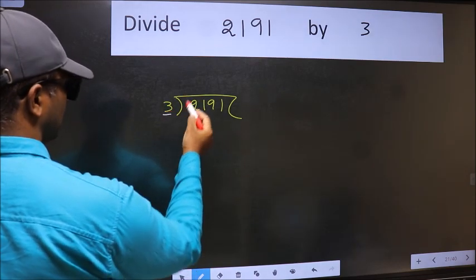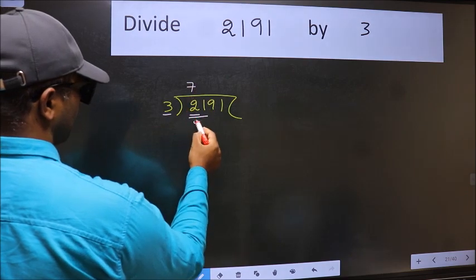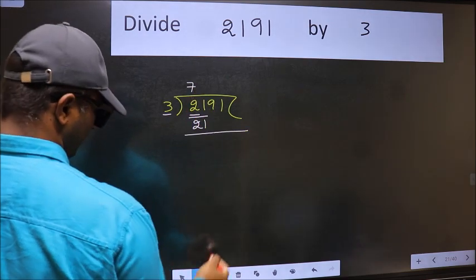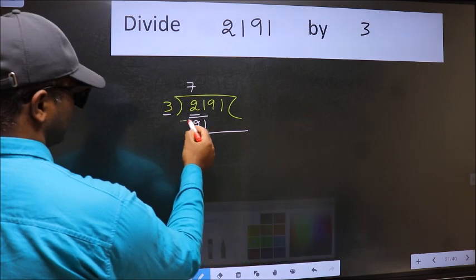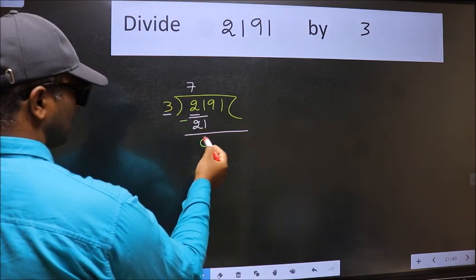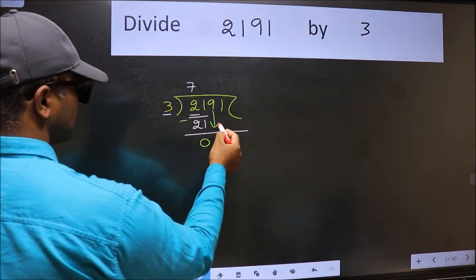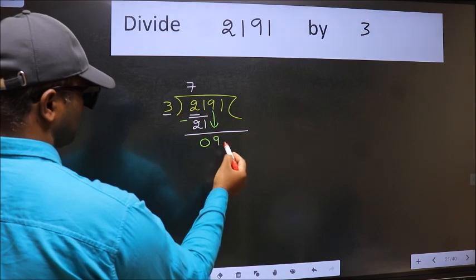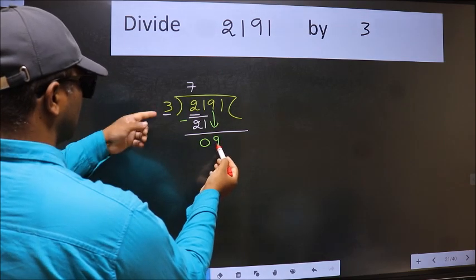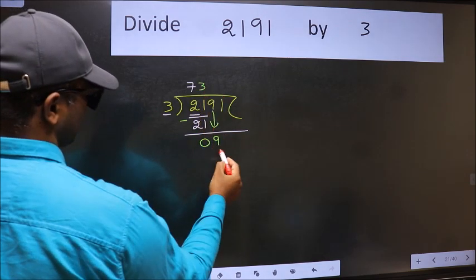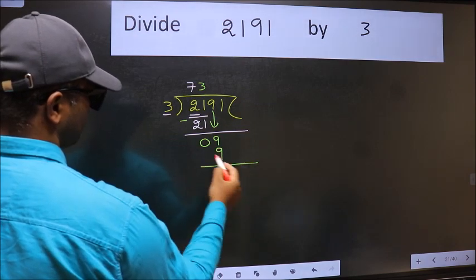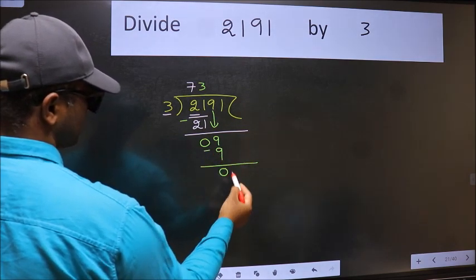When do we get 21 in 3 table? 3 times 7 is 21. Now we should subtract. We get 0. After this, bring down the beside number. So 9 down. When do we get 9 in 3 table? 3 times 3 is 9. Now we should subtract. We get 0.